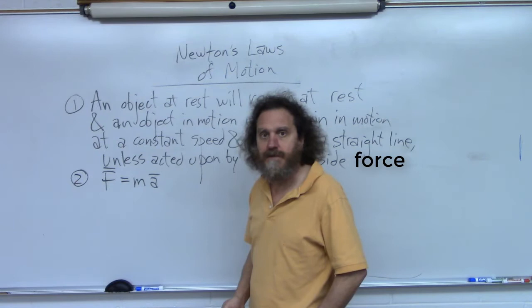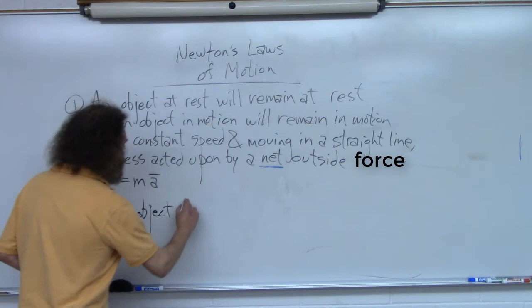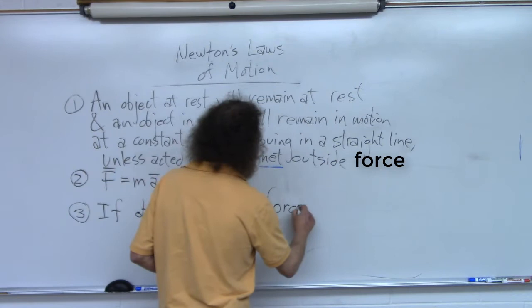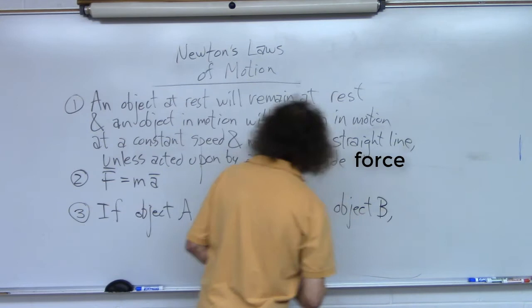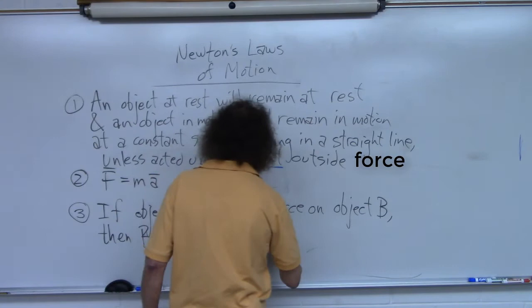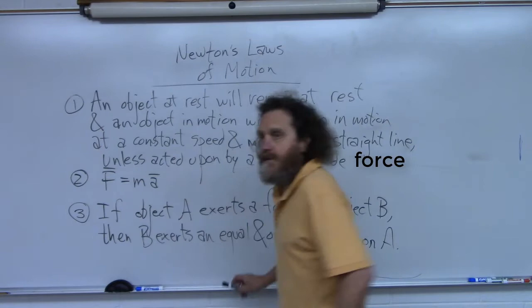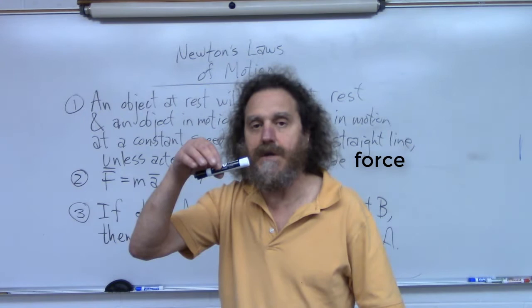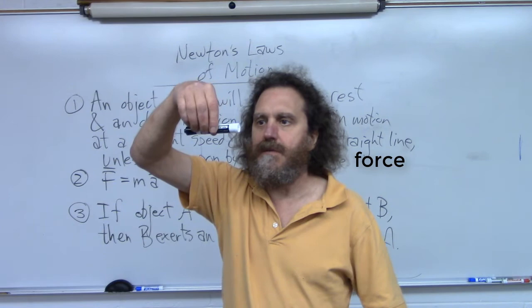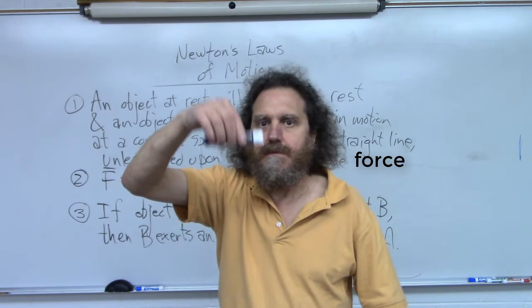Let me state the third law. If object A exerts a force on object B, then B exerts an equal and opposite force on A. That means when an object has a force exerted on it, it exerts an equal and opposite force on the object that's forcing it. For instance, I'm exerting an upward force on this marker; it is also exerting a downward force on my hand — I can feel the weight of it. It always goes two ways.